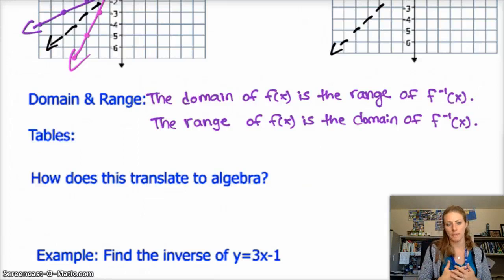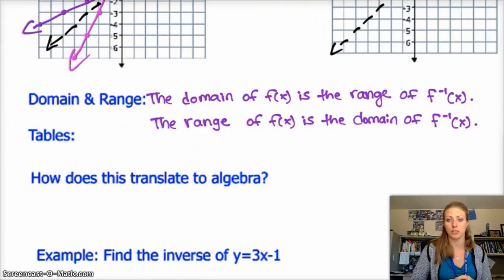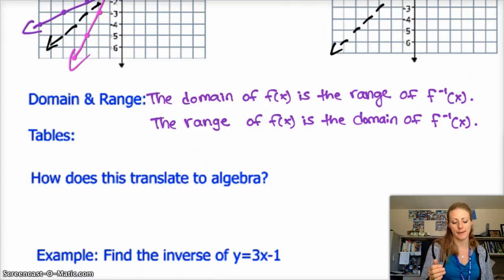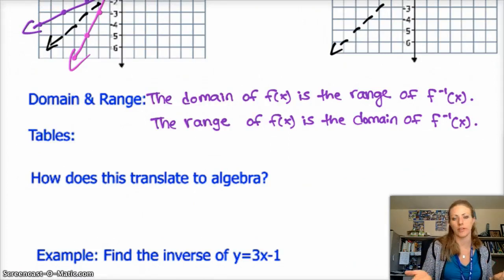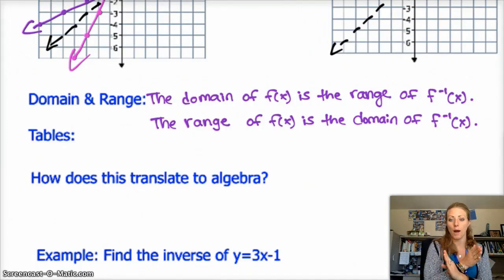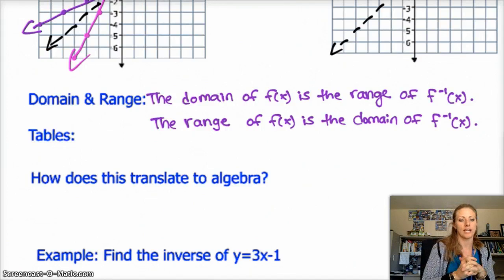This wasn't a great example, but what ends up happening with the domain and range is that because your x's and y's switch, so do your domain and range. So if your domain is 1 to infinity, then the range of your inverse should be 1 to infinity. You just swap your domain and range for the inverse and the function. And it's really clear on a table as well because all of your x values and your y values switch.